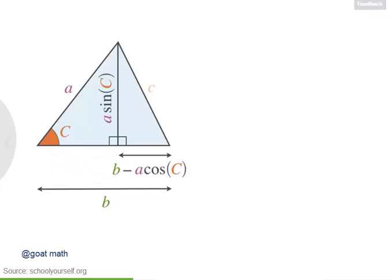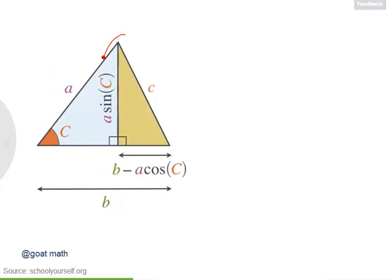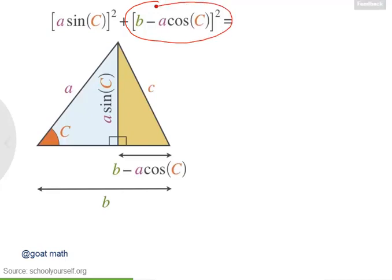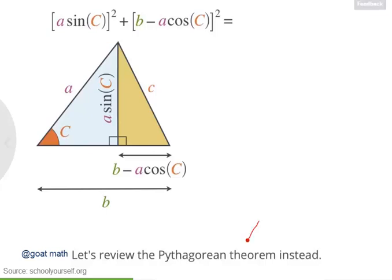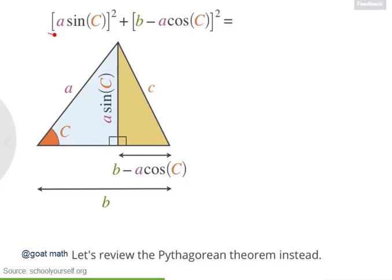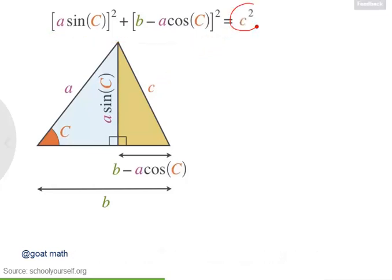So why have we been finding all these side lengths? Well, we wanted to find an expression for side length c in terms of the side lengths a and b and the angle c. Notice that side c is the hypotenuse of this right triangle, and now you have expressions for the two legs of this right triangle. So by the Pythagorean theorem, the square of a times the sine of c plus the square of b minus a times the cosine of c equals c squared.